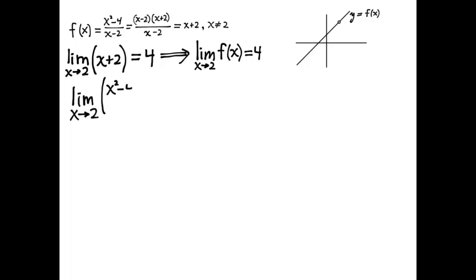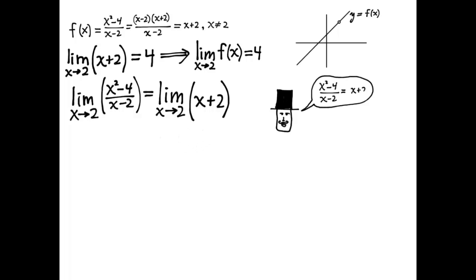If we get a problem like this then we'll factor out the x minus 2's and cancel them. Notice that this statement is true. Even though this statement is false, this statement is true because the limit statement doesn't say anything about what happens at x equals 2.